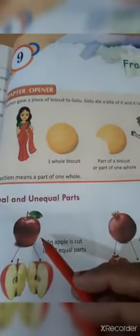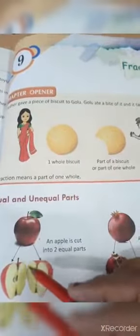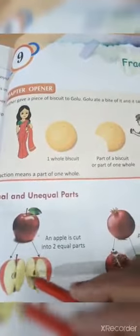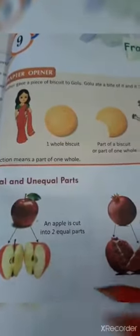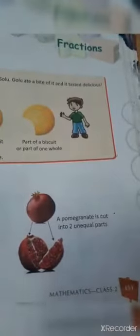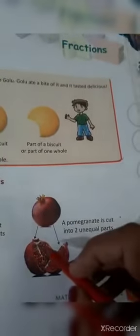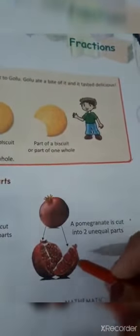When we are having an apple, it is called whole and we cut into center, it will divide into two parts, equal parts. Same with the pomegranate. When we cut in equal two parts, so it is called fraction.